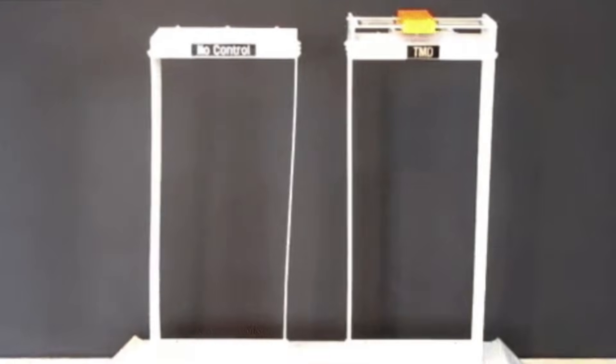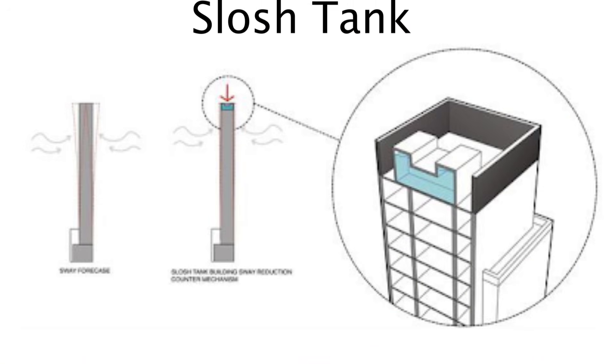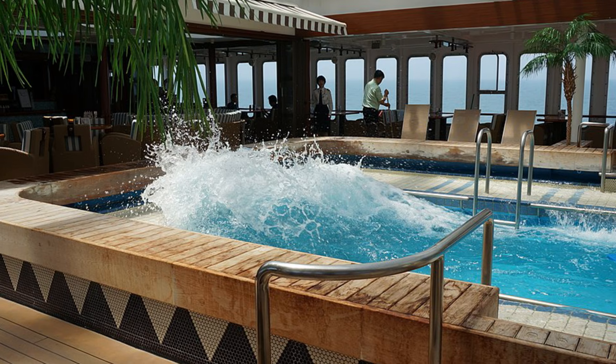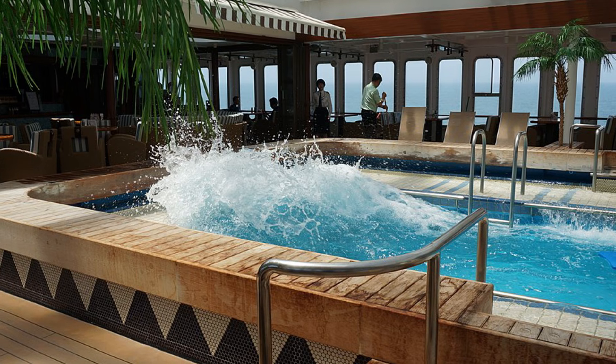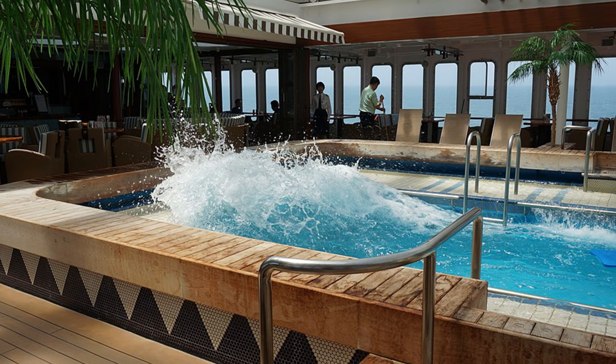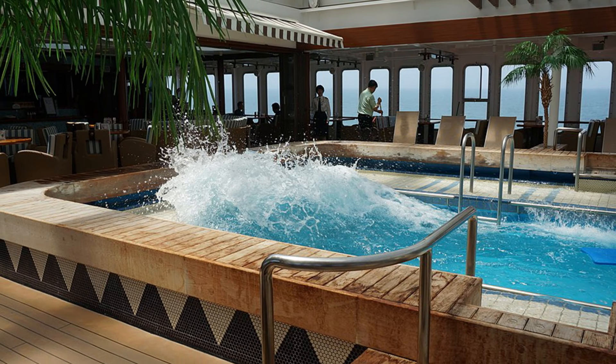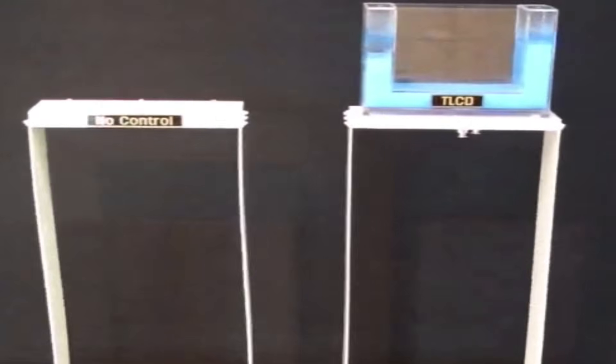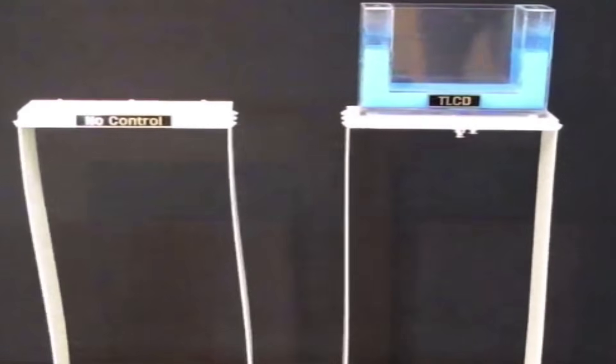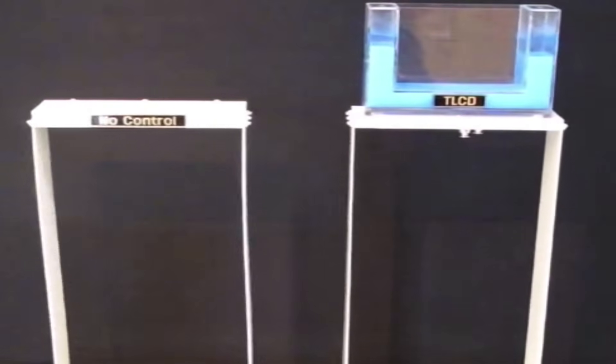But another solution is to use slosh tanks. Yes, just huge tanks of water placed at the top of buildings can reduce vibrations. This is because when a force is applied to a tank of water, the water itself applies a resultant force in the other direction. So in place at the top of a building, once the building starts to sway to the right, let's say, the water will slosh to the left and apply a restoring force to stabilize the structure.